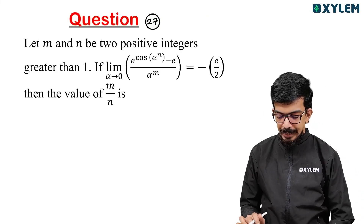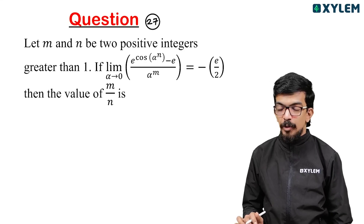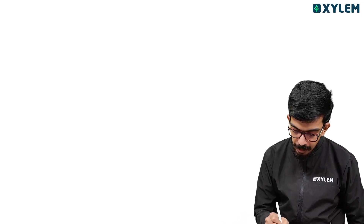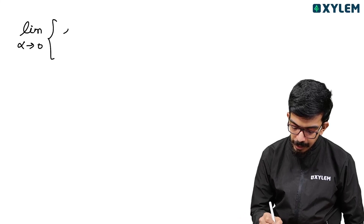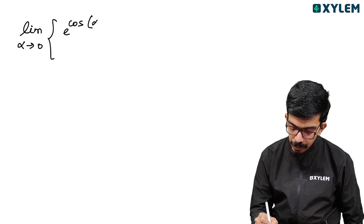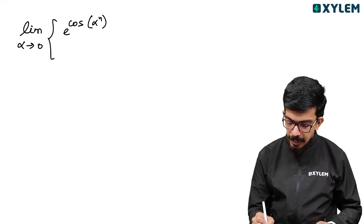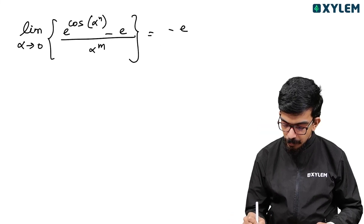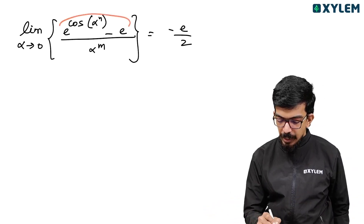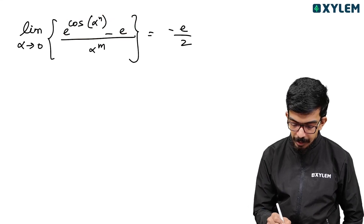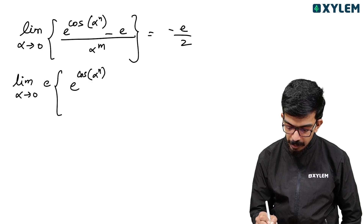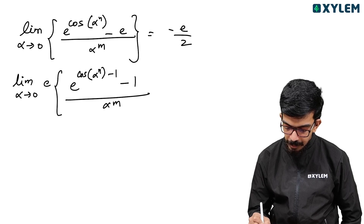Next question: Let m and n be two positive integers greater than 1. The limit as alpha tends to 0 of e raised to cos of alpha raised to n, minus e, divided by alpha raised to m, is equal to minus e by 2. Find the value of m by n.